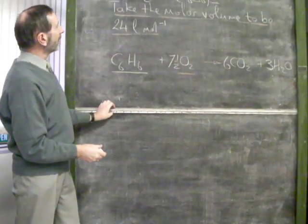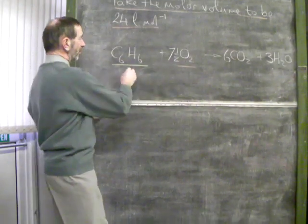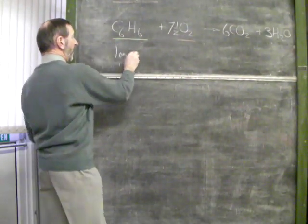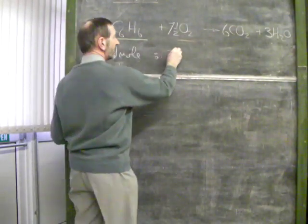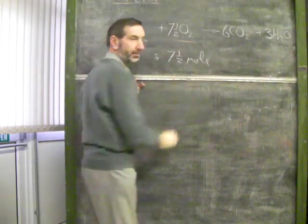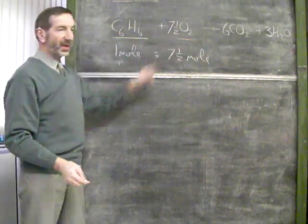Now, looking at the equation. According to this equation, 1 mole of benzene requires 7 and a half moles of oxygen. It's a simple ratio, 1 to 7 and a half.